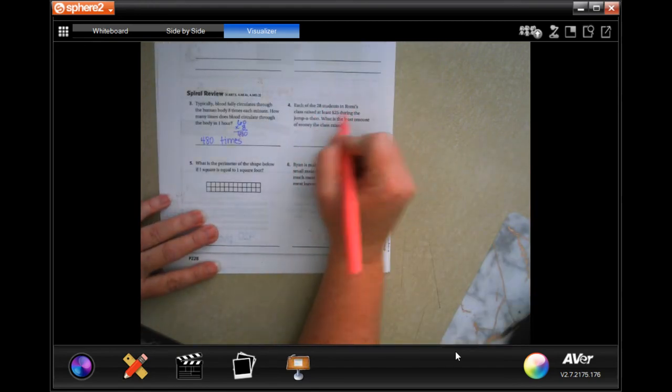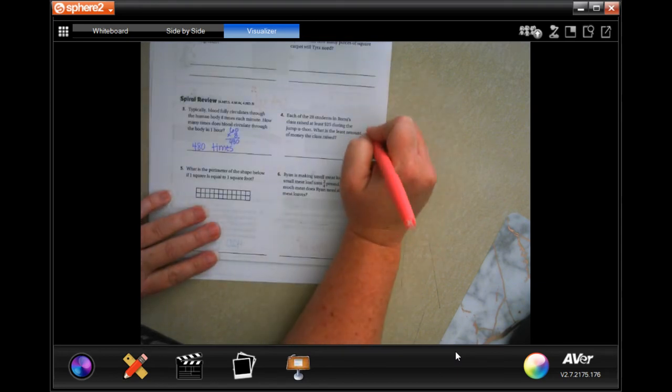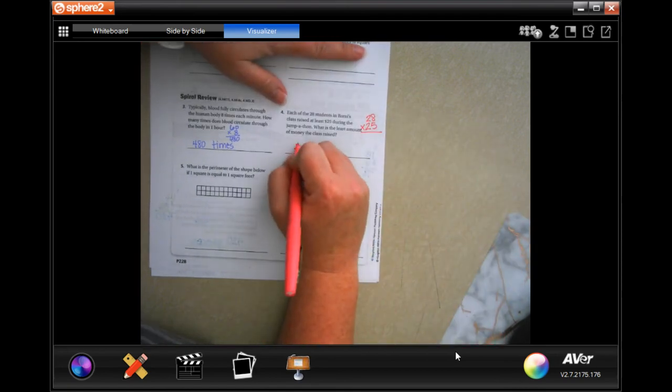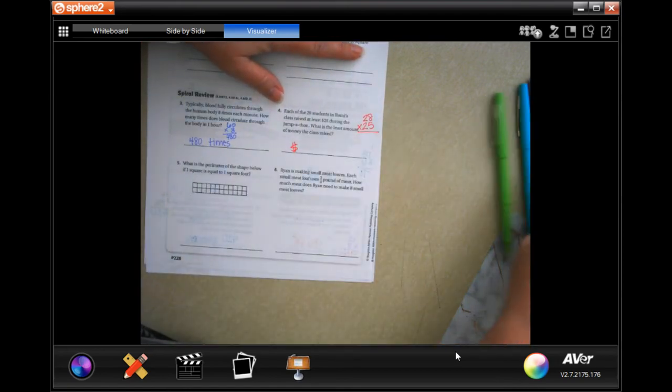Each of the 28 students in Rami's class raised at least $25 during the jump-a-thon. What was the least amount of money the class raised? Well, so, 28 kids, $25 each. Let's multiply. Okay, whatever it is, we're going to have a dollar sign as our label.